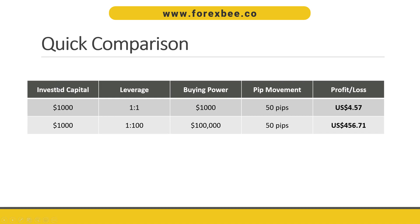Here's a quick comparison table between our two examples. In both cases, our investment capital was $1,000. Without leverage, our buying power was $1,000 and we bought one micro lot of USD/JPY — with a 50-pip move we made $4.57. With 1:100 leverage, buying power increased to $100,000, enabling us to buy one full lot — with a 50-pip move we made $456.71.